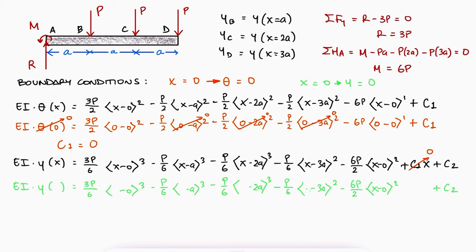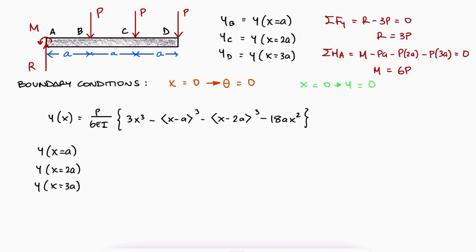Using the second boundary condition means substituting x and y with 0 in the elastic curve equation. This means that C2 is also 0. Simplifying the elastic curve expression,